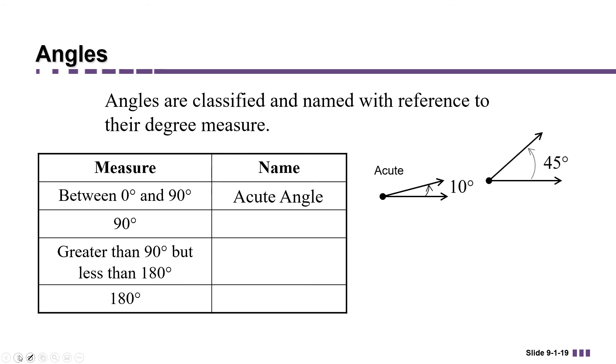Notice that both the angles 10 and 45 are between 0 and 90 degrees. They're acute angles, so they come to a sharp point.